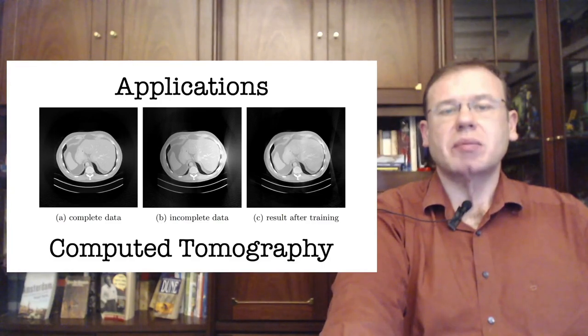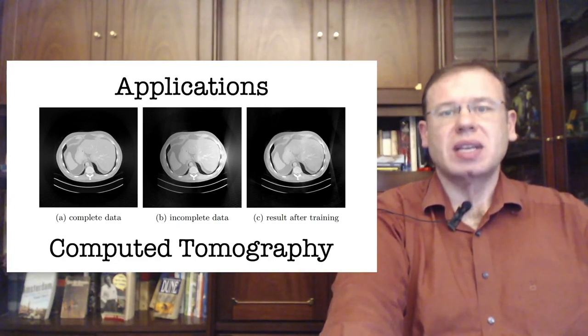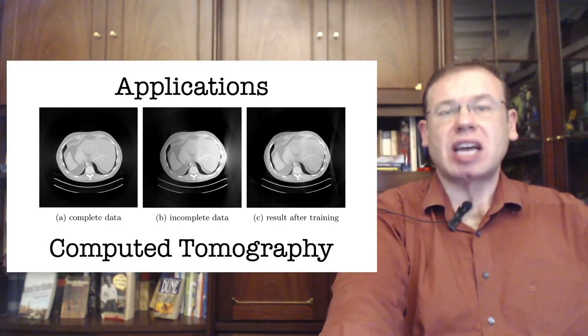Of course we are building on all these great abstractions that people have invented over the millennia such as matrix multiplications. One problem though is that the matrix under consideration is quite big. For a common 3D problem size with 512 to the power of 3 voxels and 512 projections with 512 to the power of 2 pixels each.